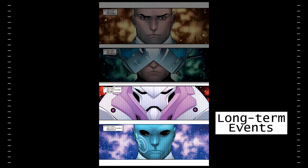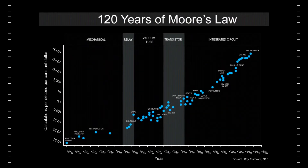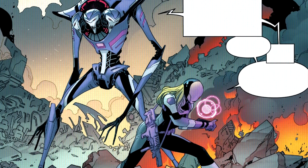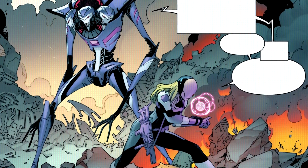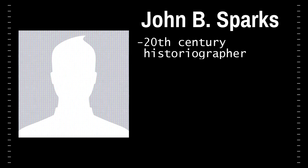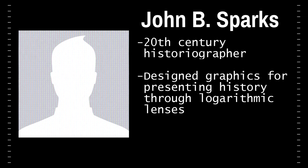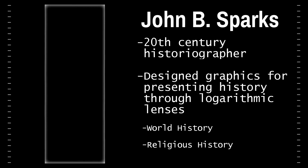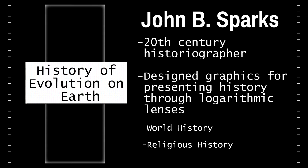While some speculators on the technological advancements of humanity use logarithmic approaches to history to postulate theories about what may occur in the distant future, probably my favorite use of logarithmic timescales for talking about history is the fascinating work by John B. Sparks. Sparks made several graphics to explore history through logarithmic lenses, from world history to religious history. However, my favorite graphic he's made has to be his coincidentally thematic graphic covering the history of evolution on Earth.